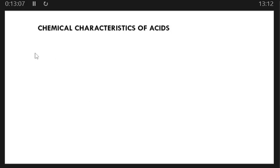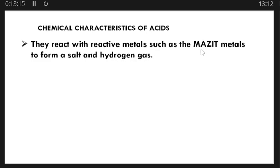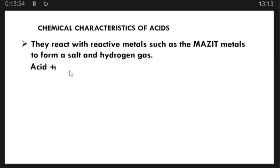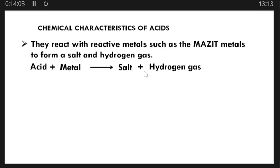Now the chemical characteristics of acids. First: acids react with reactive metals — specifically the MAZITI metals — to form a salt and hydrogen gas. MAZITI stands for: M = magnesium, A = aluminium, Z = zinc, I = iron, T = tin. These are the metals that react with acids to produce a salt and hydrogen gas. The general equation is: acid + metal → salt + hydrogen gas.